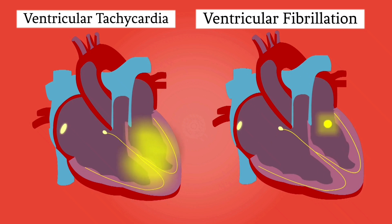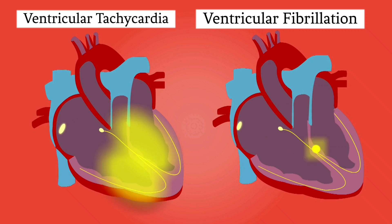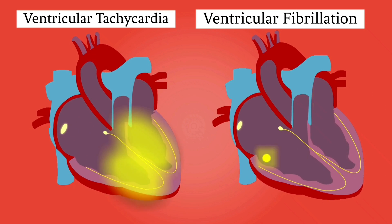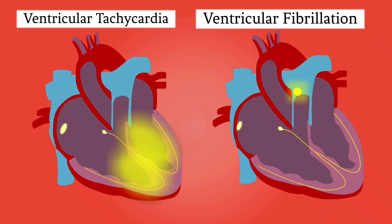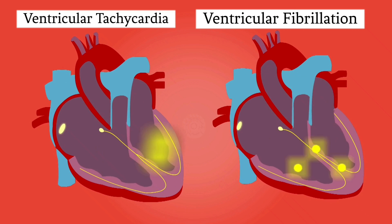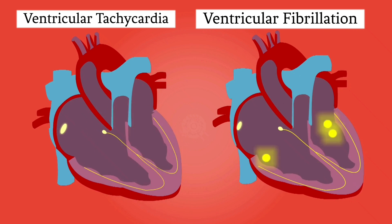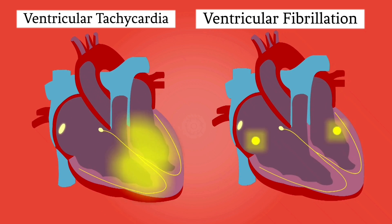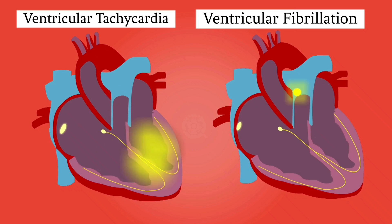A dangerous condition related to ventricular tachycardia is ventricular fibrillation, or V-fib. In V-fib, the lower heart chambers contract in a very rapid and uncoordinated manner. This irregular rhythm happens most often in people with heart disease or a prior heart attack.